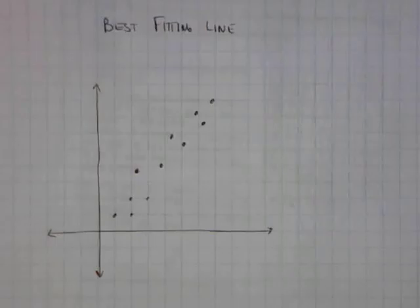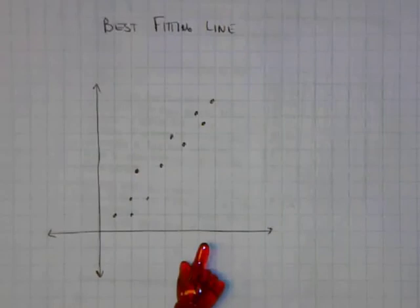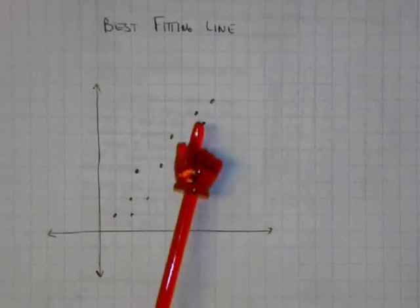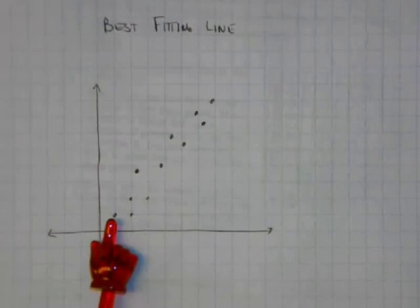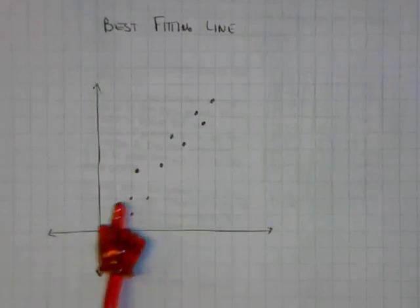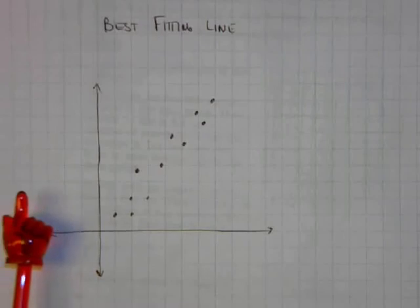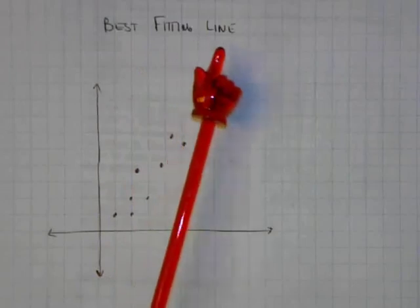Now is the point where we come back to that vocabulary term from the start of this section: 'best fitting line.' The easiest way to explain it is to show an example. What we have here is called a scatter plot — an x-axis and y-axis with a bunch of different points plotted. Each point has an x-coordinate and a y-coordinate. You can see that those points don't make a perfect line, but it's obvious that they kind of sort of fall along a line. The best fitting line is the line that does the best job of approximating the pattern in this data.